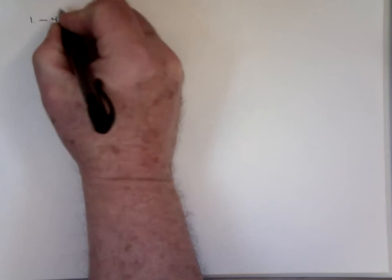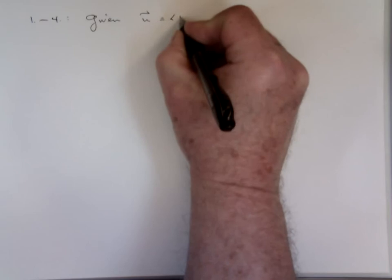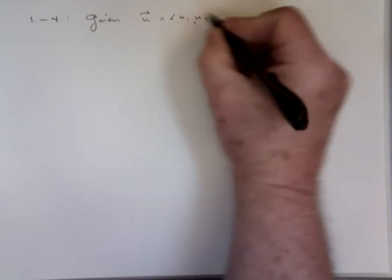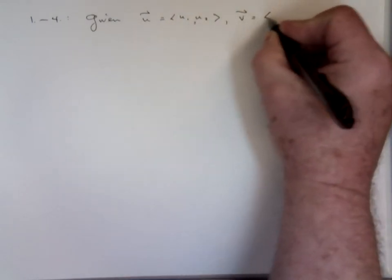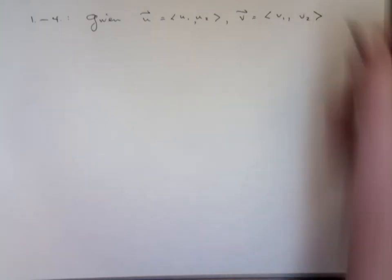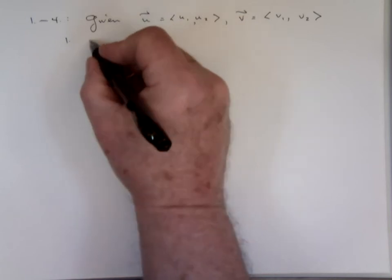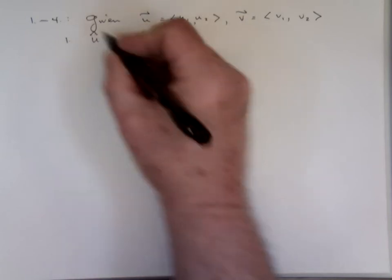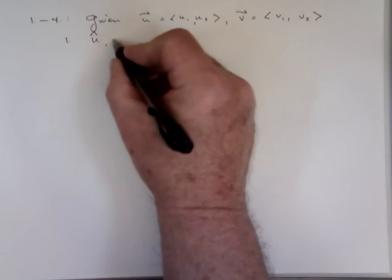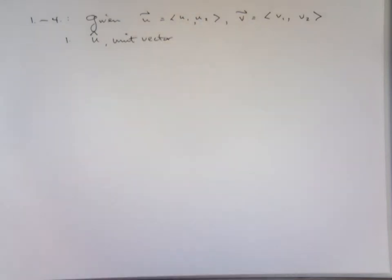All right, this first section, one through four, what I'm going to do is I'm going to be giving you two vectors. I'll be giving you two vectors in two space, and I'm going to ask you things like unit vector in the direction of u. In other words, take the vector, divide by its magnitude.